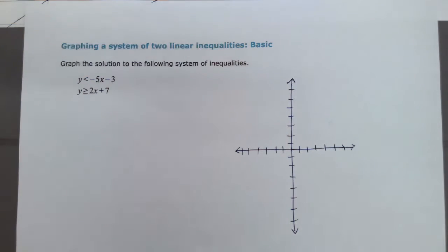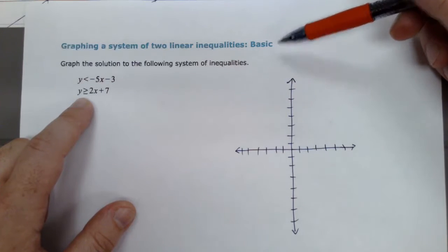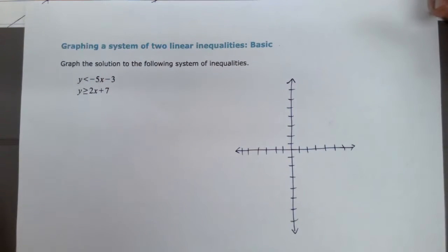Hello everybody, this is Mr. Bowman. Today we're going to be looking at how to graph a system of two linear inequalities basic. Basic in here, by the way, just means they're already in slope-intercept form, so because of that they're a little bit easier to graph.